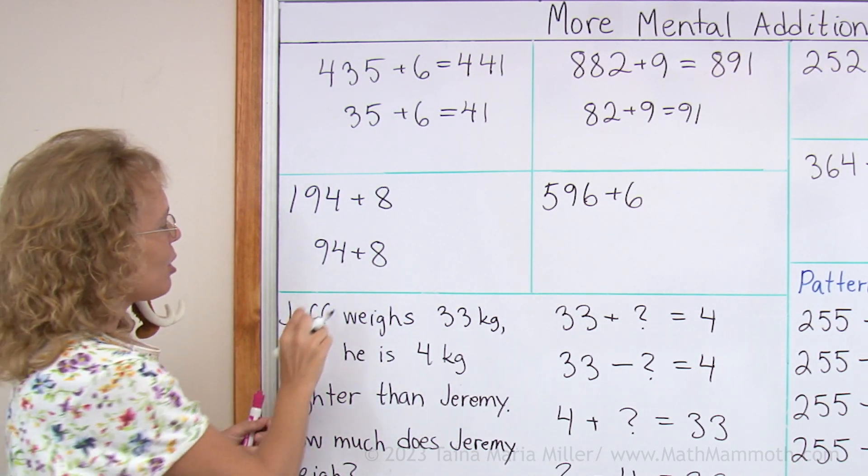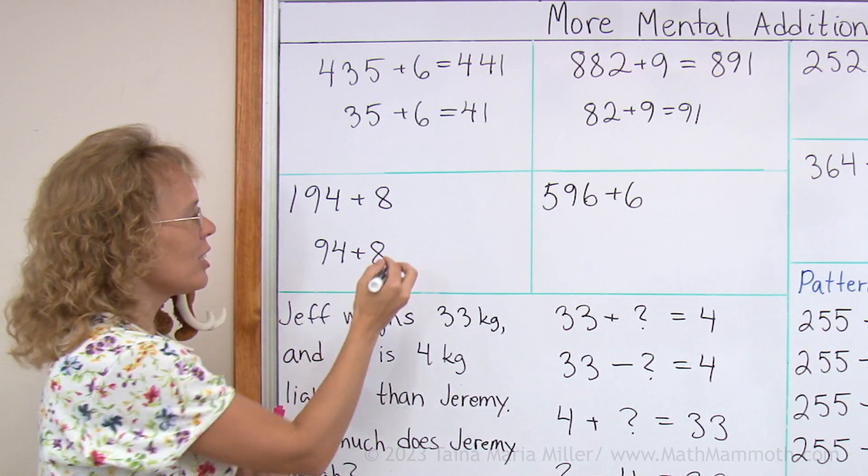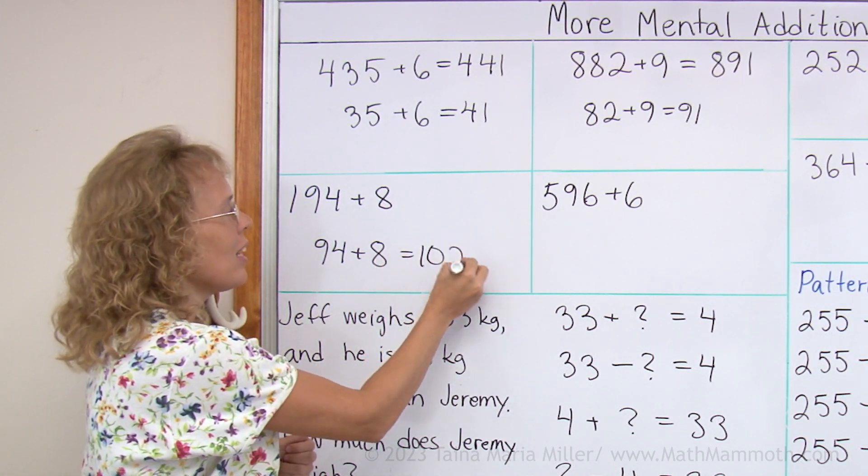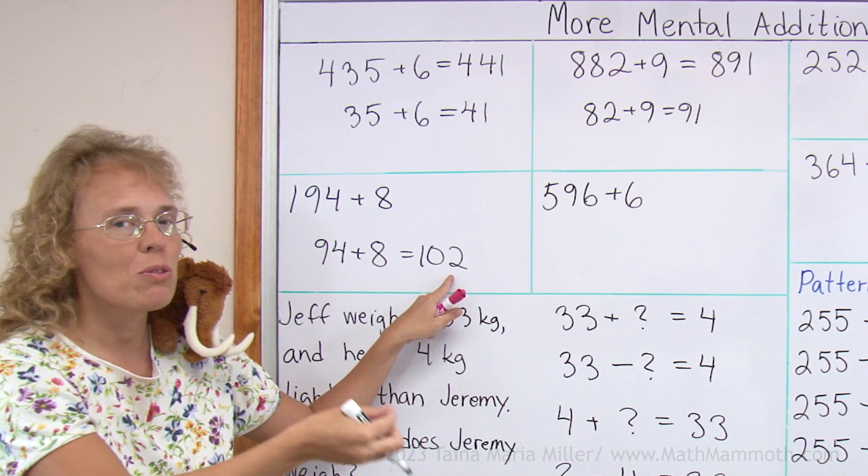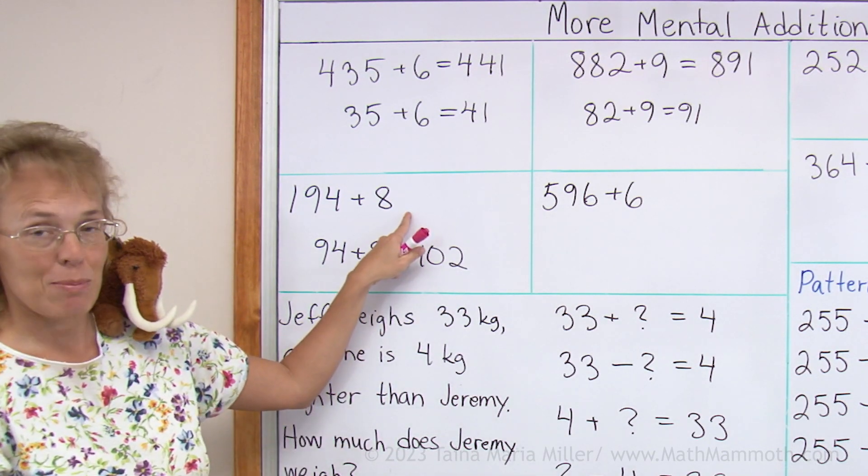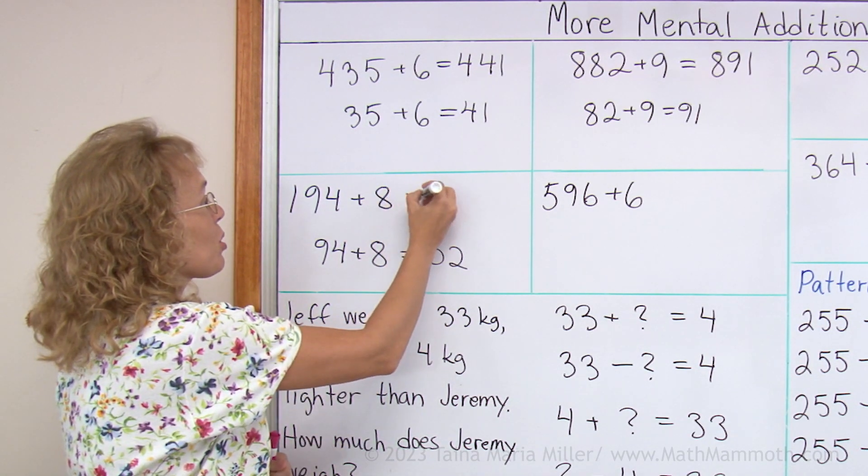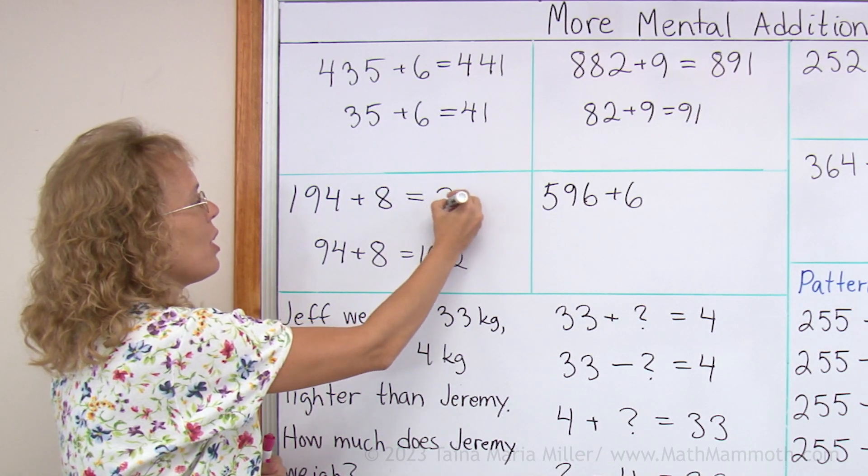Okay. And so we have 90 and 12, which is 102. So you notice that this here goes 2 over the next 100. The same happens here. It goes to the next 100. 202.